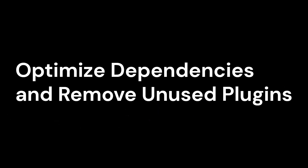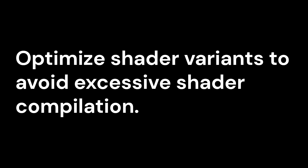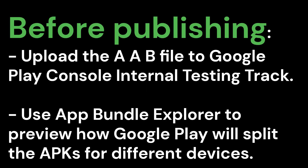Some other methods include: optimize dependencies and remove unused plugins; analyze your Assets and Plugins folder and remove unused libraries; optimize shader variants to avoid excessive shader compilation; and use Google's App Bundle Explorer to test AAB output before publishing. Upload the AAB file to the Google Play Console Internal Testing Track and use App Bundle Explorer to preview how Google Play will split the APKs for different devices.